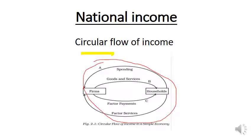First, you have a firm and a household. A firm is a company, and a household is a household. You can think of them as two separate entities — a firm and a household.